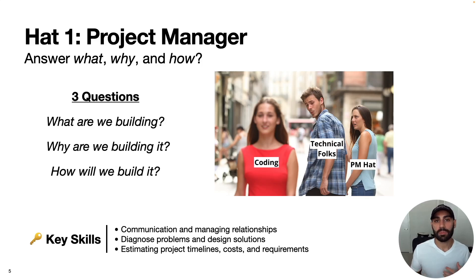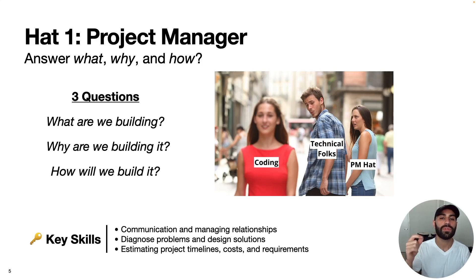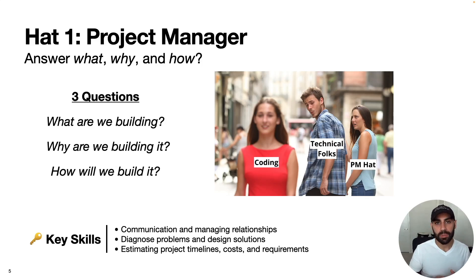The key skills for the project manager hat are communication and managing relationships — as a full-stack data scientist you're usually solving other people's problems by talking with stakeholders to understand their issues and discuss potential solutions. The next key skill is the ability to diagnose problems and design solutions, finding root causes and thinking through the value and costs of each potential solution. Finally, being able to estimate project timelines, costs, and define requirements — doing this step right can save you a lot of headaches down the line.